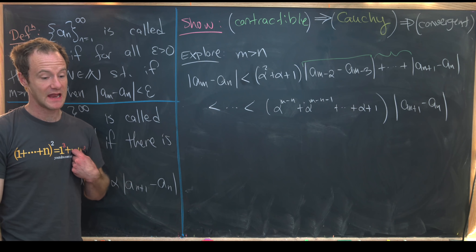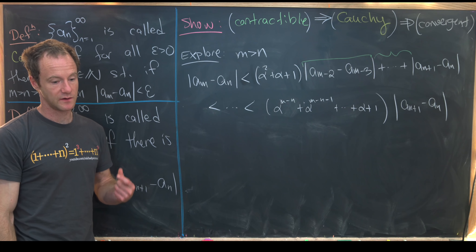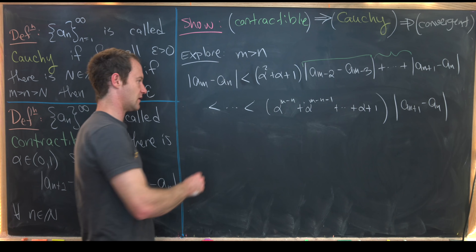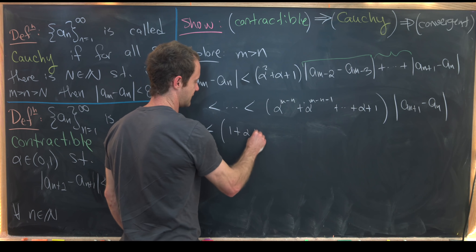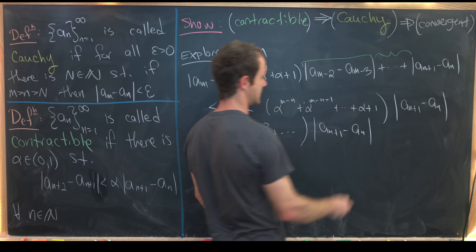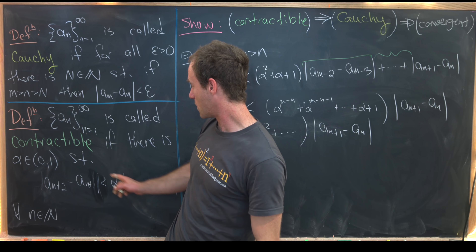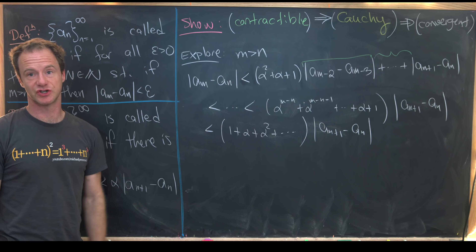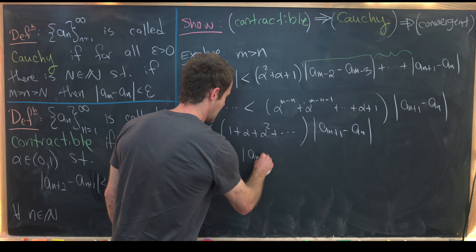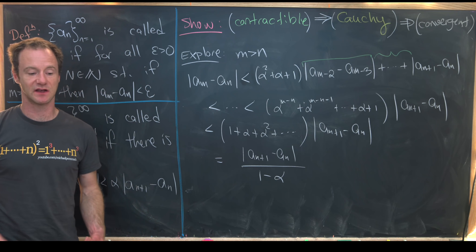This finite sum is smaller than the corresponding infinite geometric series: 1 + alpha + alpha^2 + … Since alpha is between zero and one, this series converges, and by the geometric series formula it equals 1/(1 - alpha). So |a_m - a_n| < |a_{n+1} - a_n| / (1 - alpha).